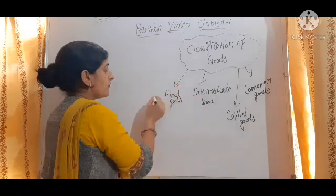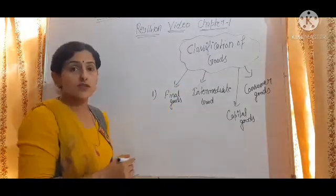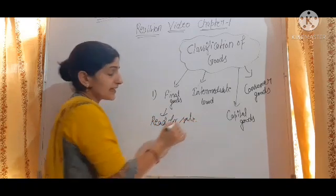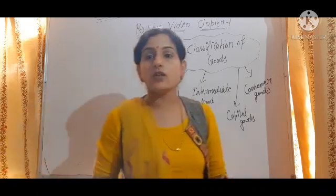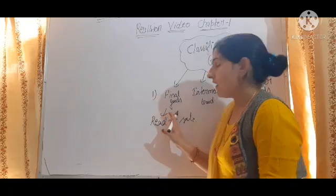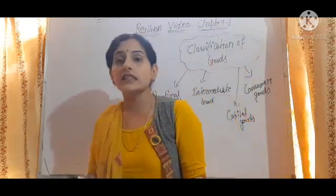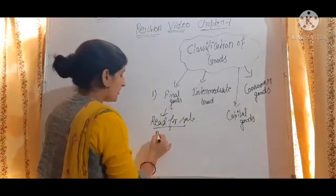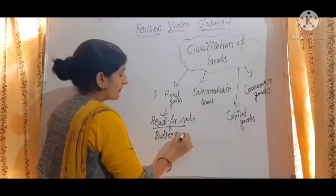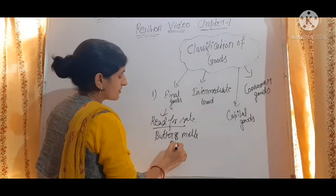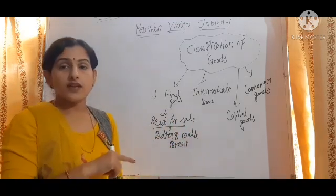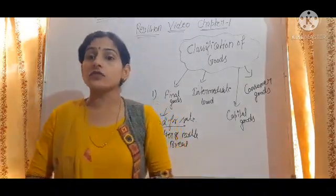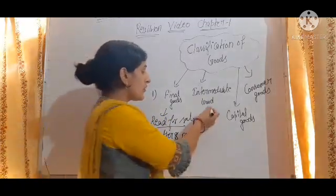The first classification is final goods. Final goods are those goods which are ready for sale, or these are directly consumed by the consumer to satisfy their own wants. For example, butter, milk, and bread. These are consumed by the consumer to satisfy their own needs.